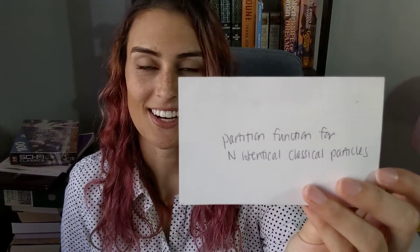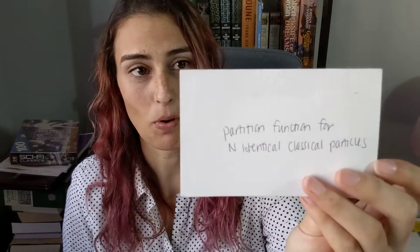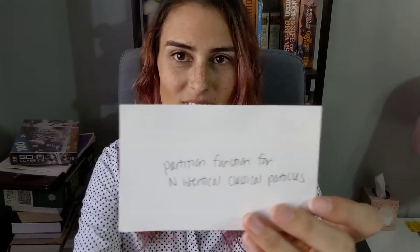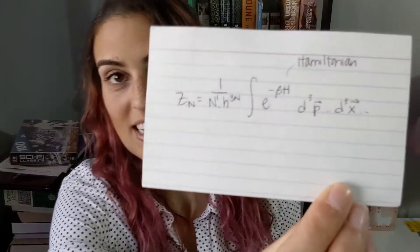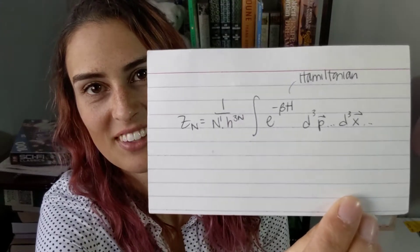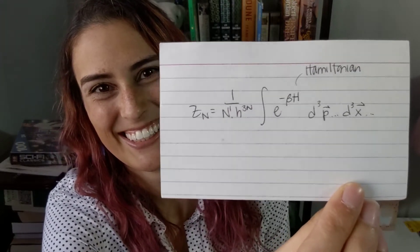Partition function for N classical particles: this is Z sub N equals 1 over N factorial times h to the 3N, times the integral of e to the minus beta H over a volume element. Here, big H is the Hamiltonian.